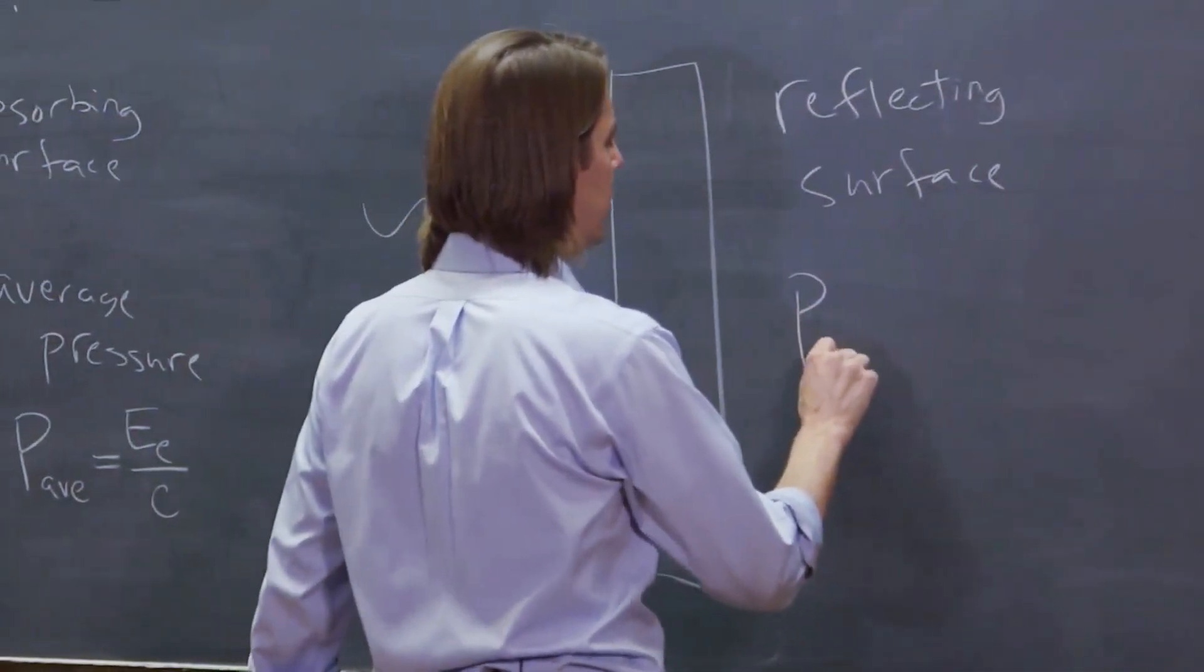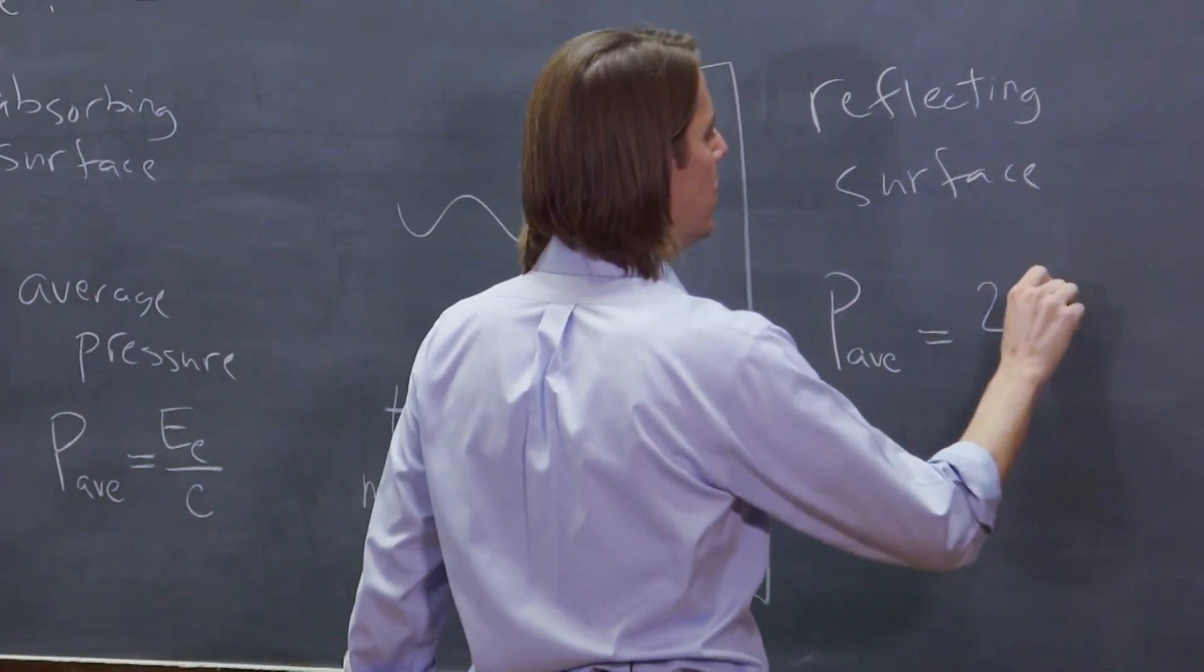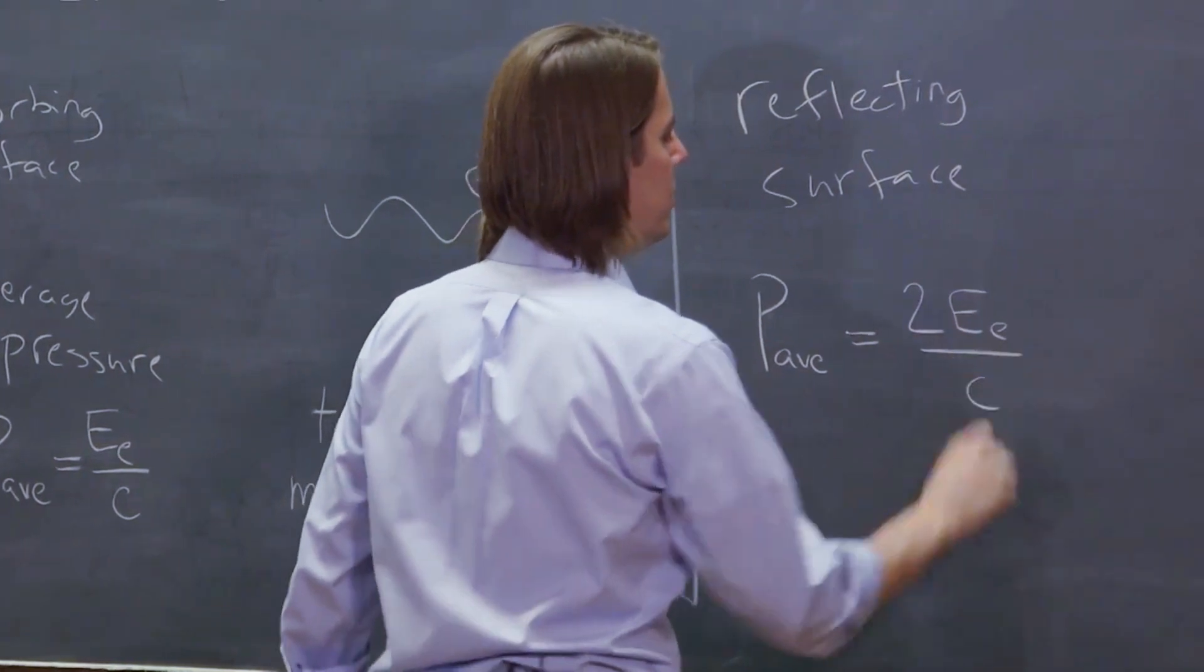So P average, the average pressure, is two times the irradiance over the speed of light.